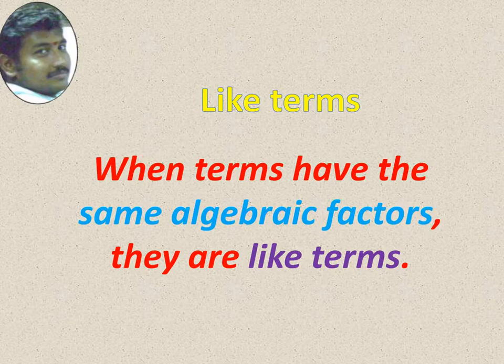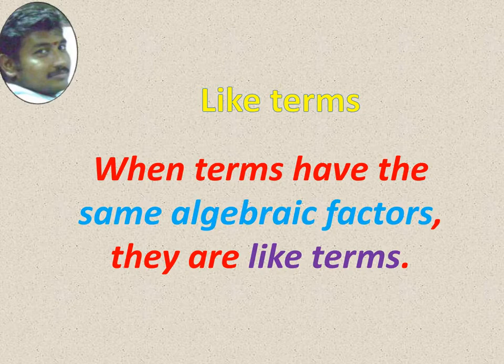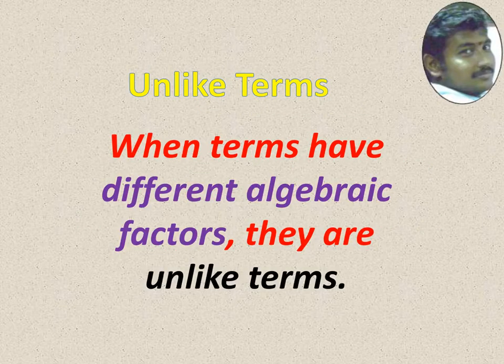Like terms — you must know like terms. When terms have the same algebraic factors, they are like terms. Algebraic factors are same, then they are like terms. If they are not same, then unlike terms. When the terms have different algebraic factors, then they are unlike terms.